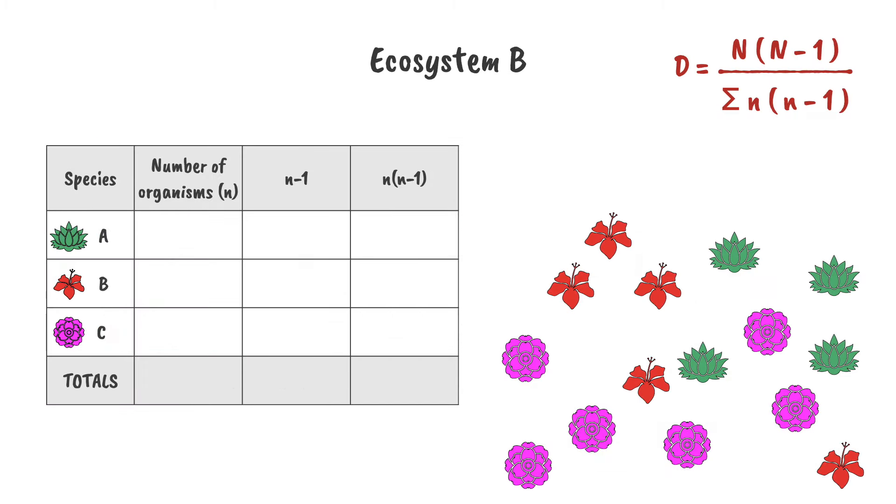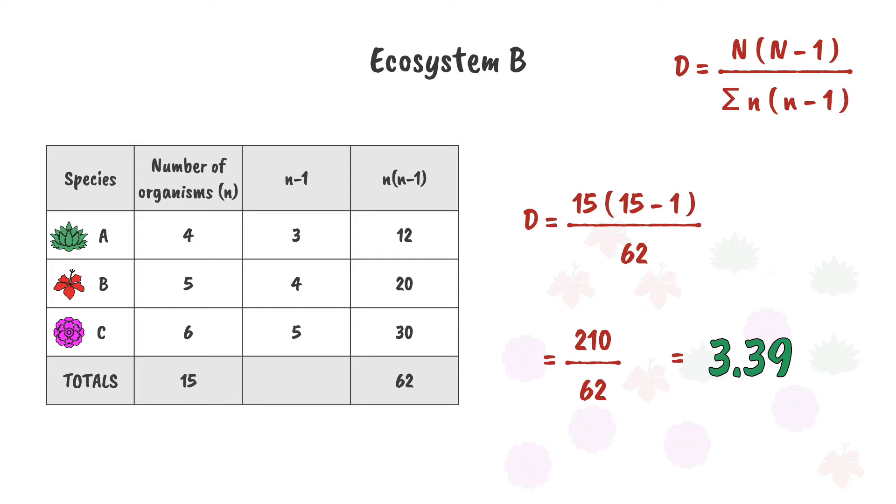We can do the same process for ecosystem B, adding the values in the table and substituting them into the equation. For this location, we get a value of 3.39.